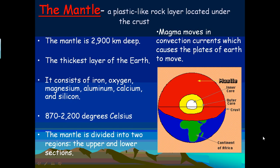The mantle is the second layer. It is a plastic-like rock layer located under the crust. The mantle is 2,900 kilometers deep and is the thickest layer on Earth.